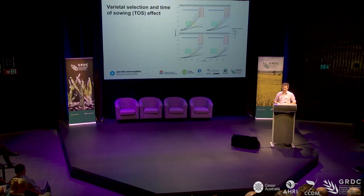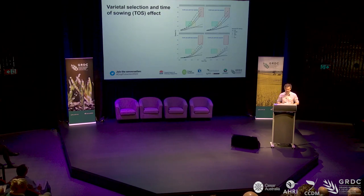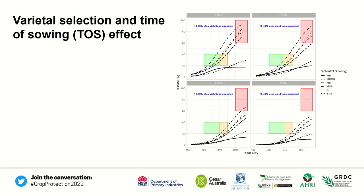Now to some more detailed stuff. We have a set of trials — four years of data with four times of sowing: middle of April, end of April, middle of May, and end of May. Time of sowing is coded one to four. We have 30 varieties with different resistance ratings to STB, assessed every two weeks for percentage whole-plant infection levels, scored as a percentage.